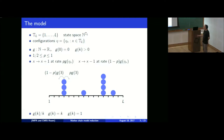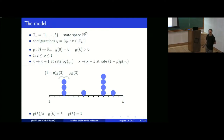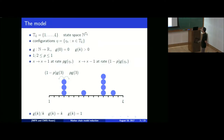The dynamics will be described by two parameters: g, which is a weight function, strictly positive and zero at zero; and p, which tells me how the particles jump to the right and to the left. If you have eta_x particles at a site, one of them will jump with rate g(eta_x) times p to the right and g(eta_x) times (1-p) to the left. So g(eta_x) gives the rate at which particles jump and p gives the direction.